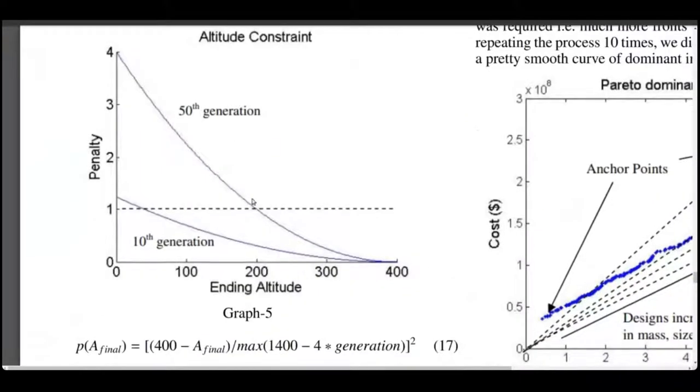Here, the penalties for the 10th and 50th generation of models have been plotted. And as you can see, this is the penalty function that we got for the final altitude that is reached by the model.